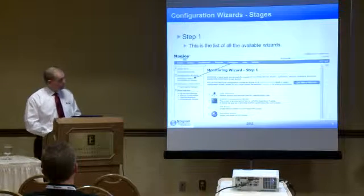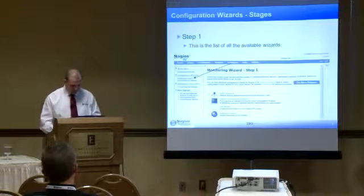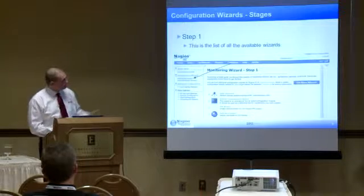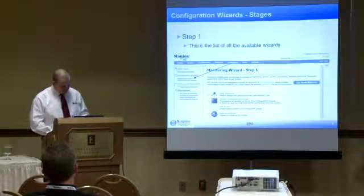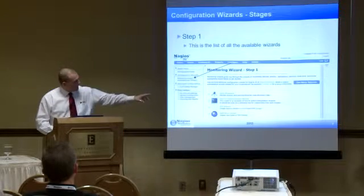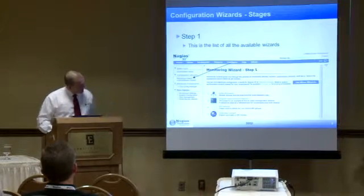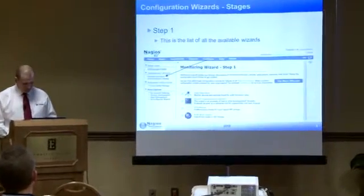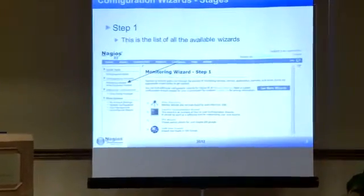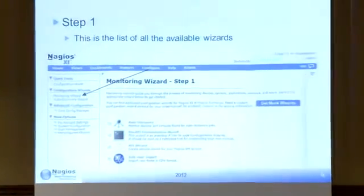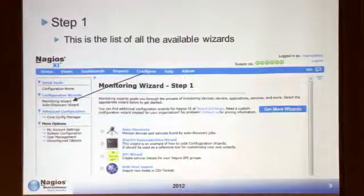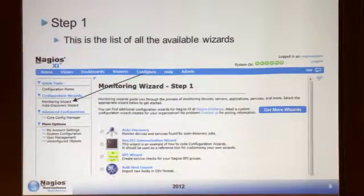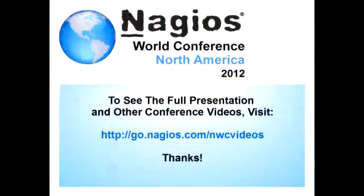Now I'm going to delve into configuration wizards. This is the Configure tab, and from it you can click the Monitoring Wizard. This presents you with step one, showing a list of all the available configuration wizards you can run through. One thing I want to point out is that as we go through the different steps, the step number doesn't directly correlate to the stage number in the PHP code — I'll show you that as we go through. Why? I'm not entirely sure.